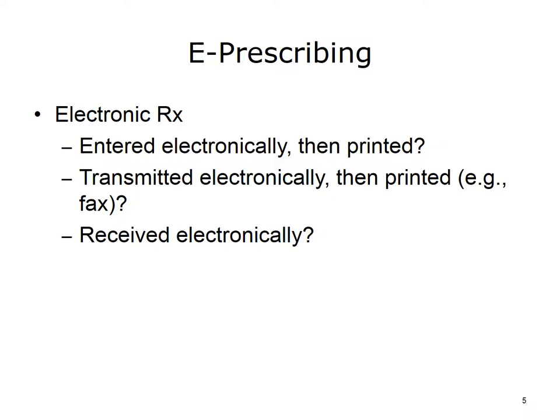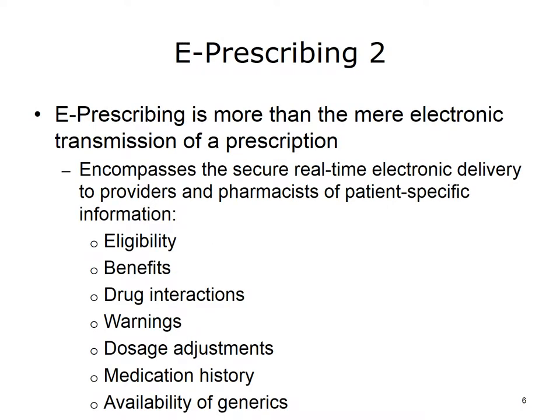So, what exactly do we mean by e-Prescribing? Some have considered a prescription entered electronically but then printed to be e-Prescribing, but that's probably not getting to exactly what e-Prescribing is. What about electronically ordered prescriptions that are transmitted electronically but then printed? That's probably not e-Prescribing either. E-Prescribing is more than the mere electronic entry or transmission of a prescription. It encompasses the secure, real-time electronic delivery to providers and pharmacists of patient-specific information. The information may include a patient's insurance eligibility, or what benefits they are entitled to, or whether or not there are drug interactions with a prescription being ordered, any warnings or dose adjustments that are recommended, and it may include medication history and the availability of generic medications.